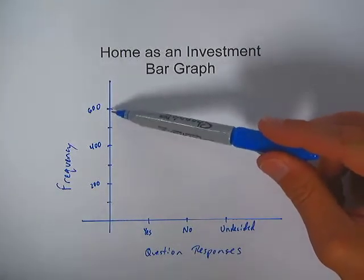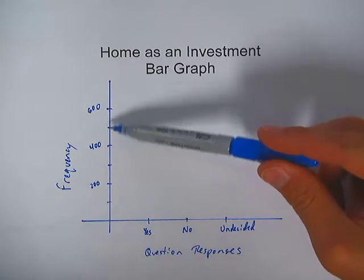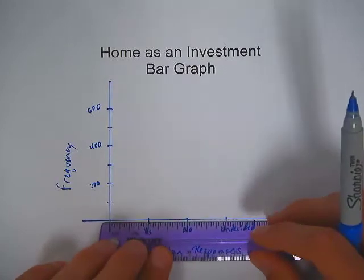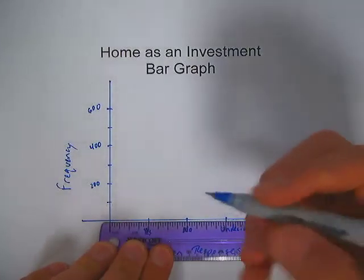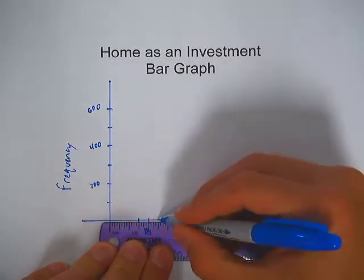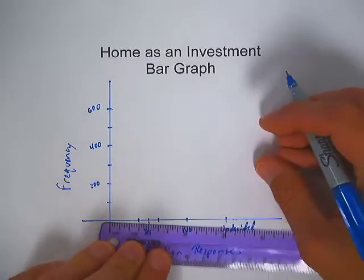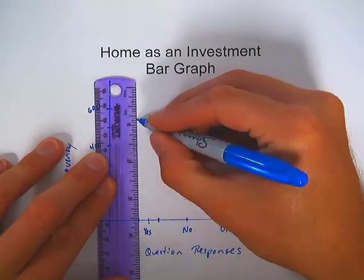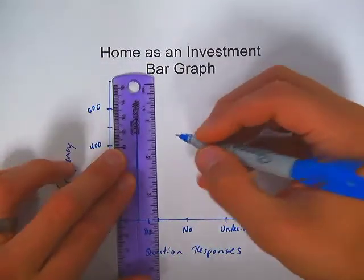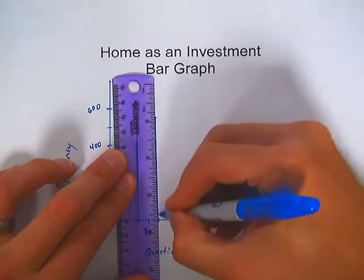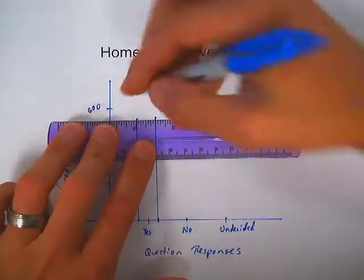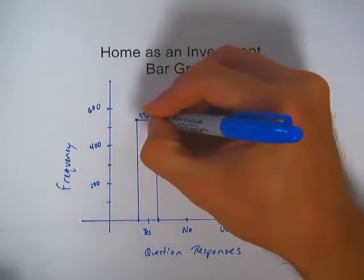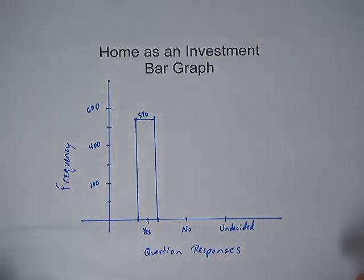540 is going to be between 500 and 600, but closer to 500. I want the bar centered on yes, so I'll draw both sides of the bar going straight up to 540 and finish it off at the top. It's also common to write the frequency above the bar.